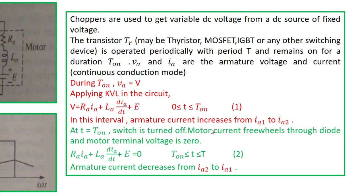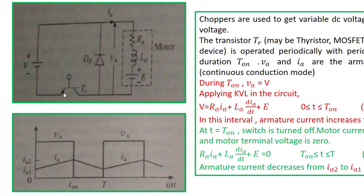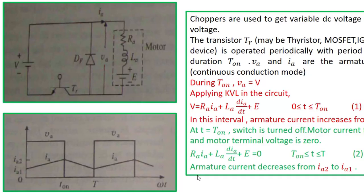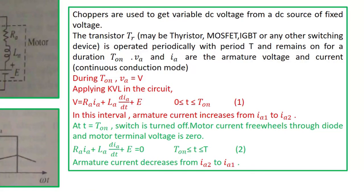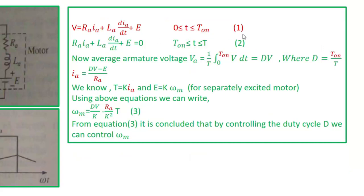At t = TON the switch is turned off, motor current freewheels through the diode, and motor terminal voltage is zero. When the switch is off, the source is disconnected and the loop has no source, so applying KVL gives: 0 = IA×RA + LA×(dIA/dt) + E. This is equation 2 during the OFF period, and armature current decreases from IA2 to IA1.